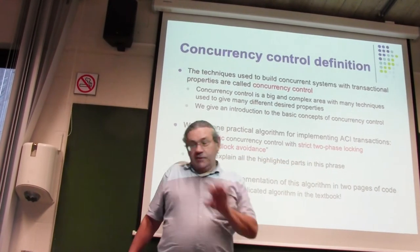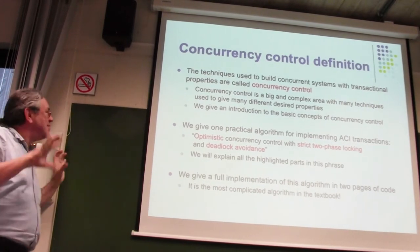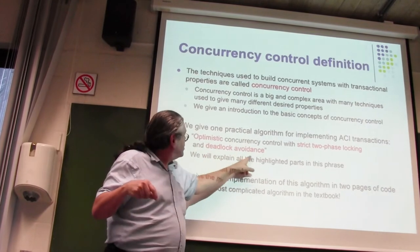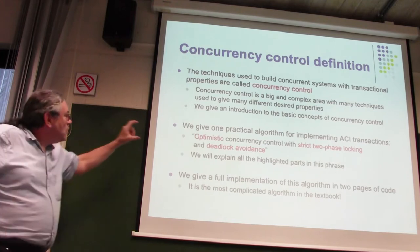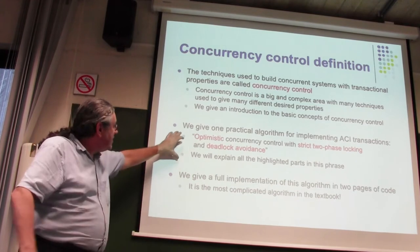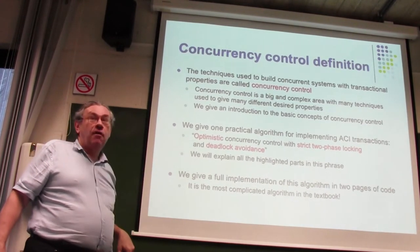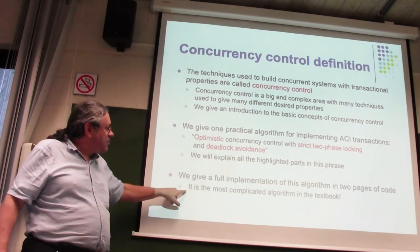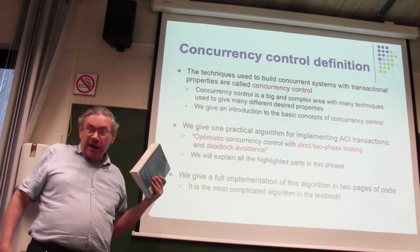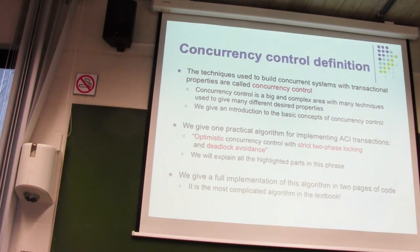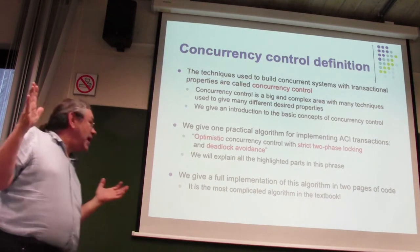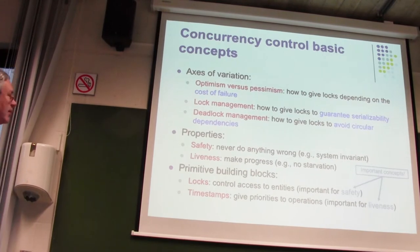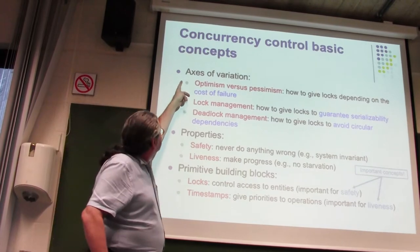Today I'll show you one algorithm for implementing transactions — specifically lightweight transactions, without persistence or durability. The algorithm can be summarized as: optimistic concurrency control with strict two-phase locking and deadlock avoidance. Each of these parts is a property with alternatives: optimistic vs pessimistic, strict vs non-strict two-phase locking, and deadlock avoidance vs deadlock detection. This algorithm is implemented in two pages of code using active objects in a multi-agent style, and it is the most complicated algorithm in the book.